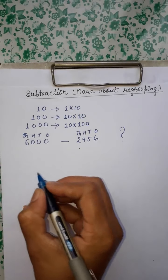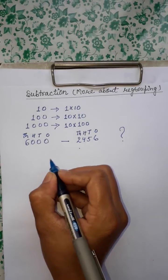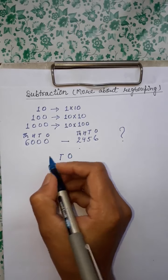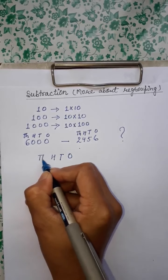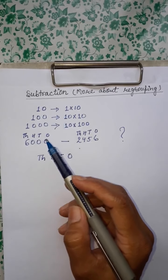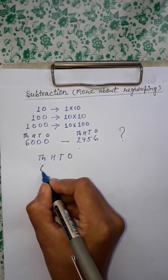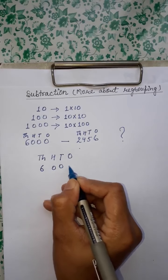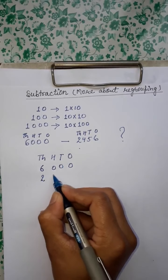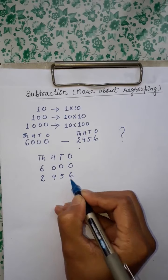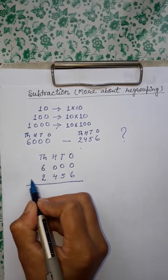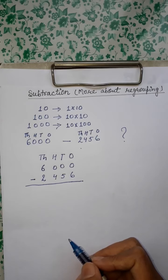Let's see — Step 1. First, addition ya subtraction mein humein kya karna hota hai? Ab place bana lo: 1s, 10s, 100, 1000. Ab yahan hum subtraction ki baat kar rahe hain. We have to write the greater number first — 6,000 — and what's the next number? 2,456. Then add the symbol of subtraction.